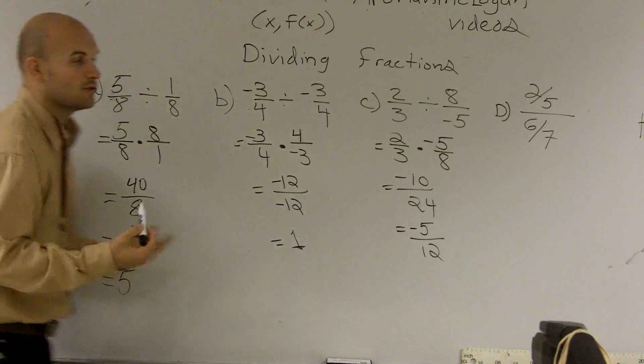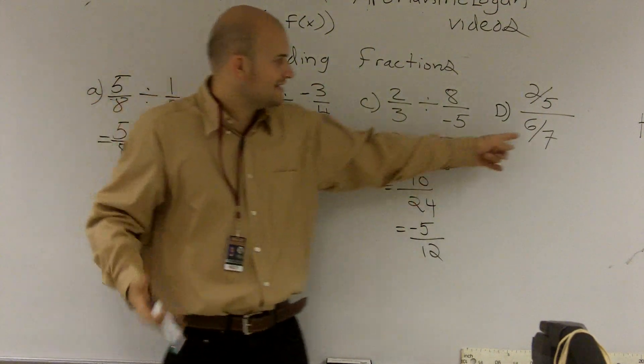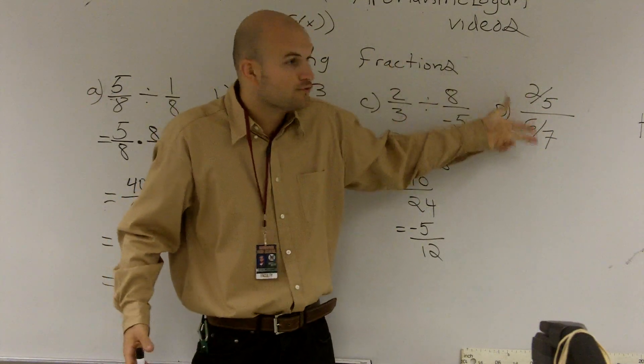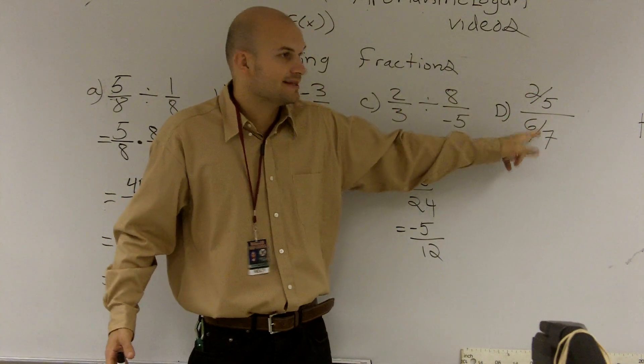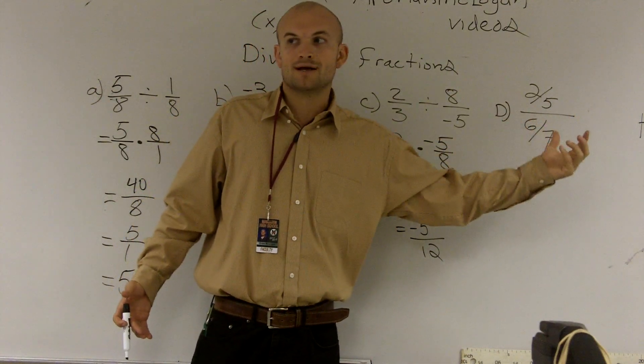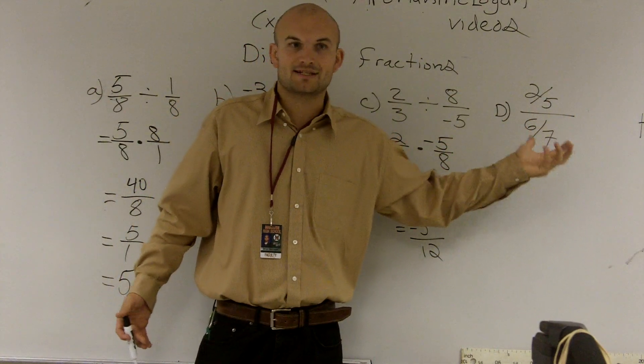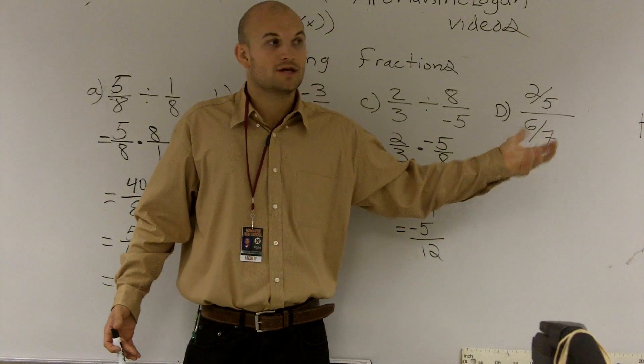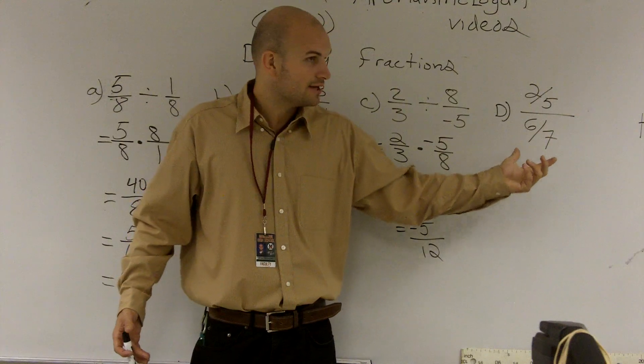So what our goal is to get this bottom to be 1, right? We only want one fraction. Right now, we have two fractions. So we want to get this bottom to be 1. So we know we have to multiply a fraction by what to get it to be 1? Reciprocal. Right?